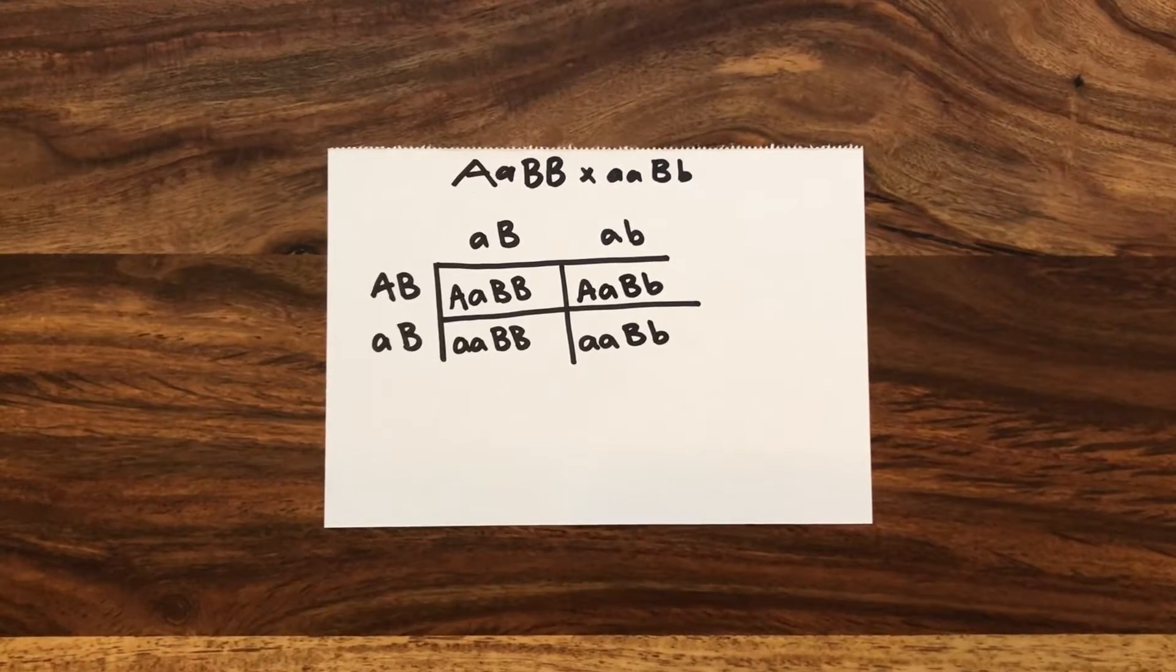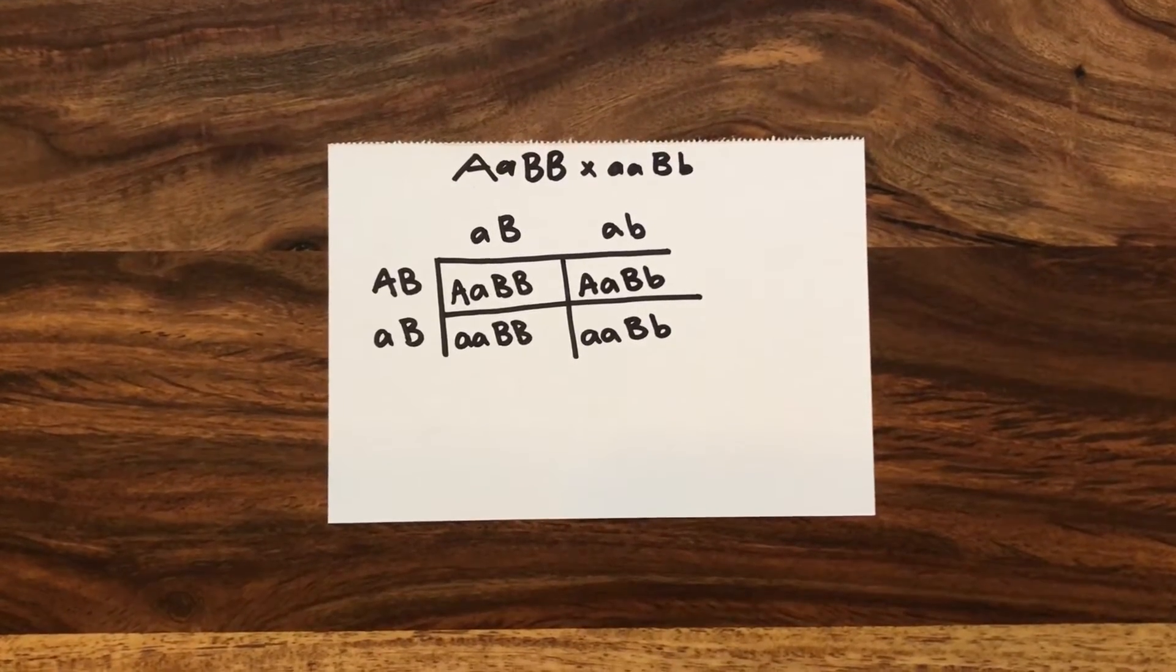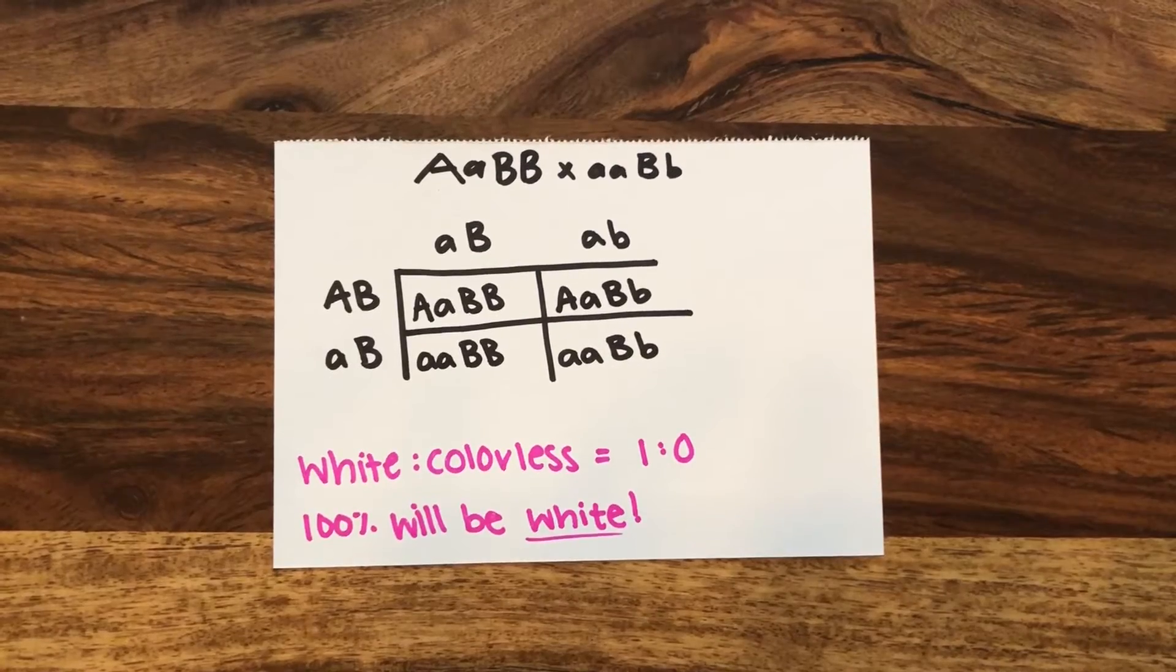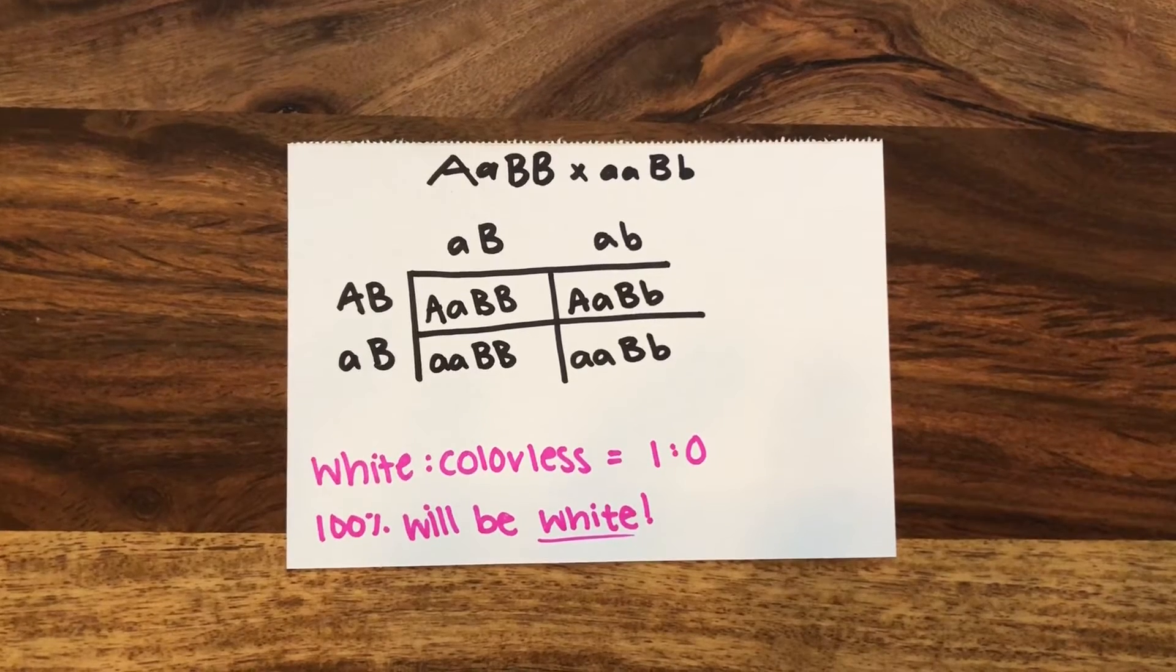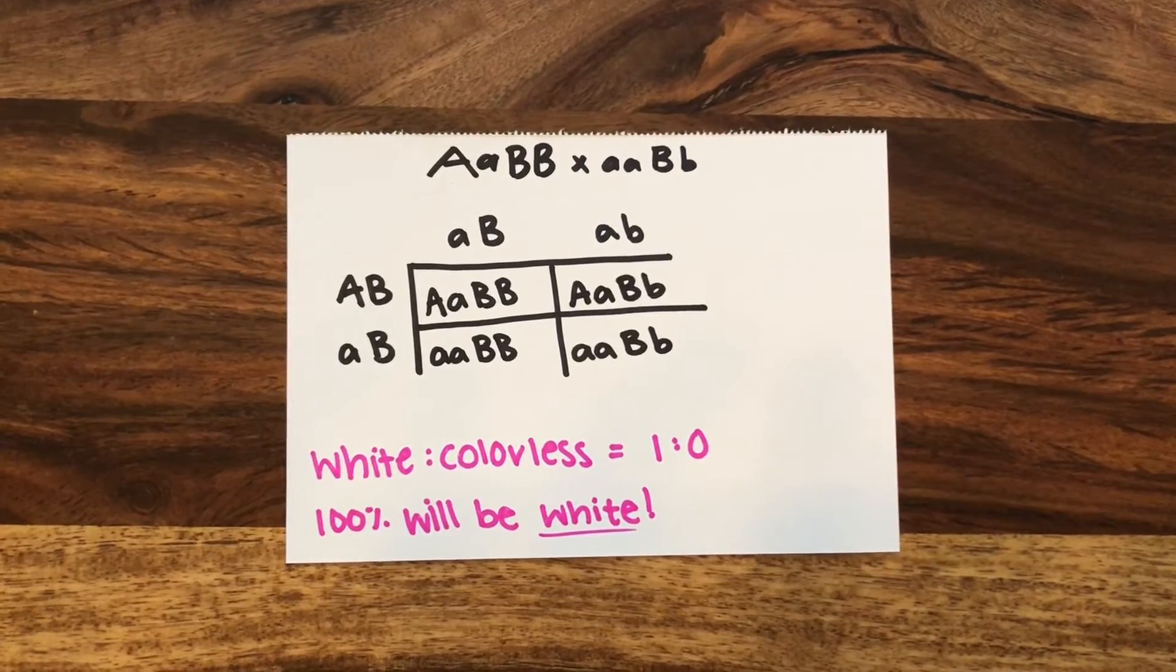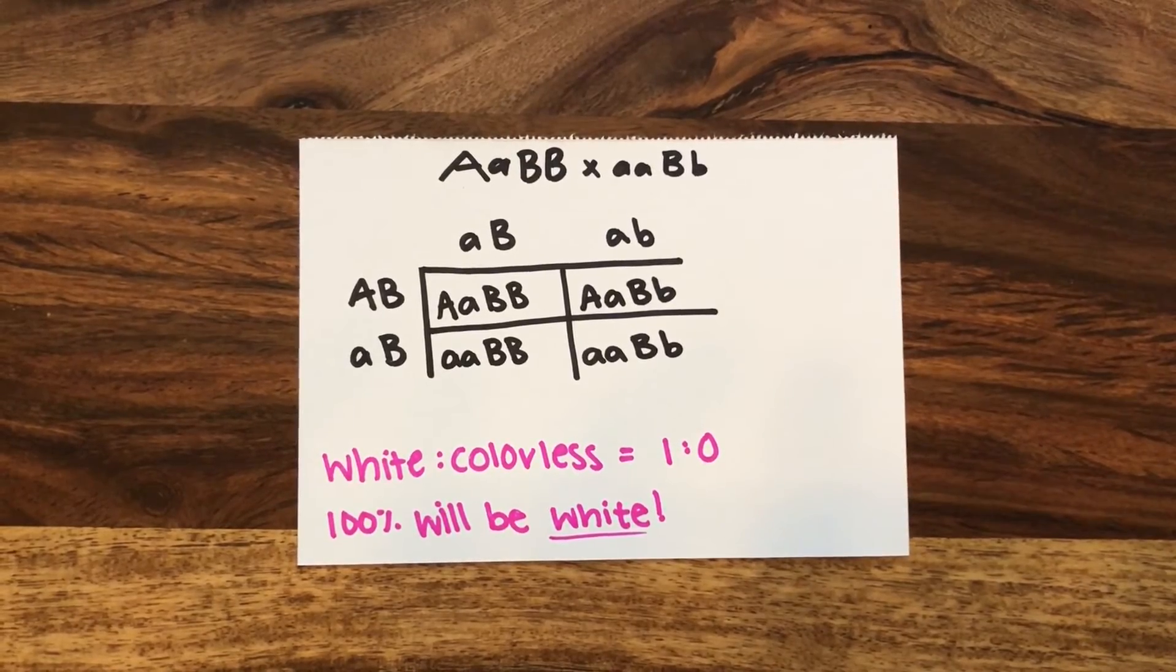If we were to complete a cross between big A, little A, big B, big B, and little A, little A, big B, little B, four out of four, or one out of one, offspring would have at least one dominant allele between the two loci. This means that 100% of the offspring would be white, and there is a 0% chance that these two individuals could have colorless offspring.